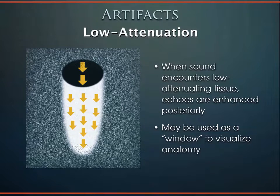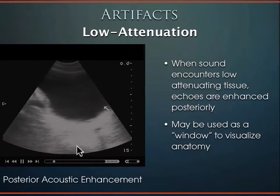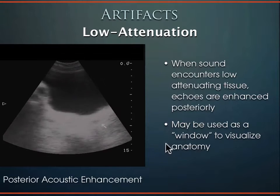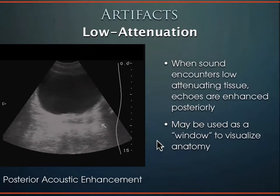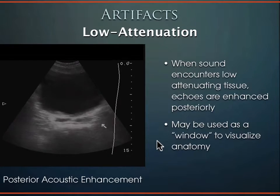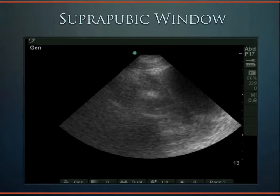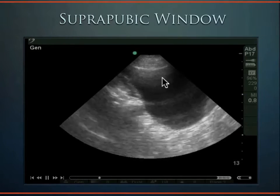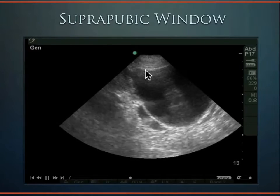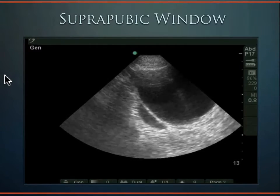Keep in mind that the bladder is a low-attenuating structure—sound loves to travel through it, and everything behind it becomes hyper-echoic. Sometimes you need to turn down the far-field gain because things are too over-gained back there. Use the bladder as your window to see the pelvis, but back off on the far-field gain to see structures behind it. Another artifact is reverberation artifact—equidistant bright arcs coming down from the transducer. We see those a lot when looking at the bladder.